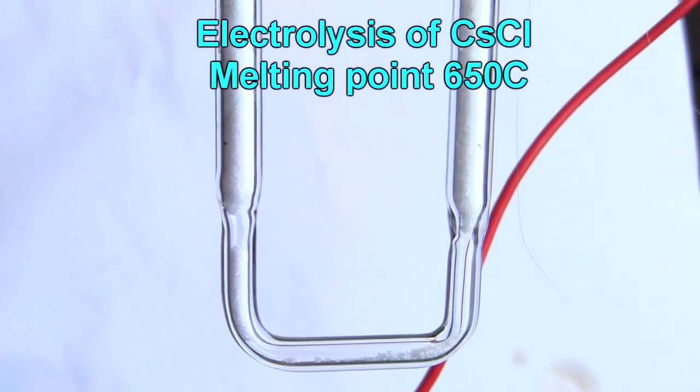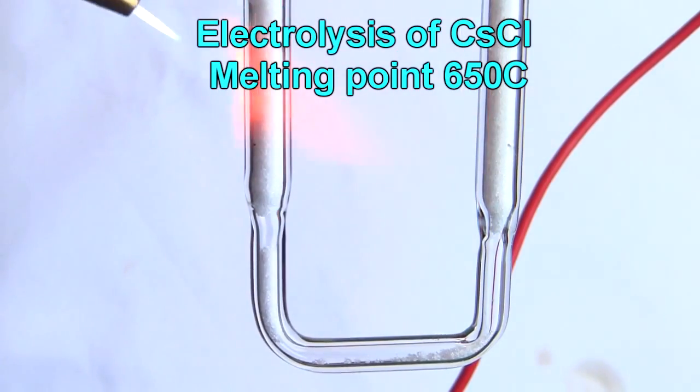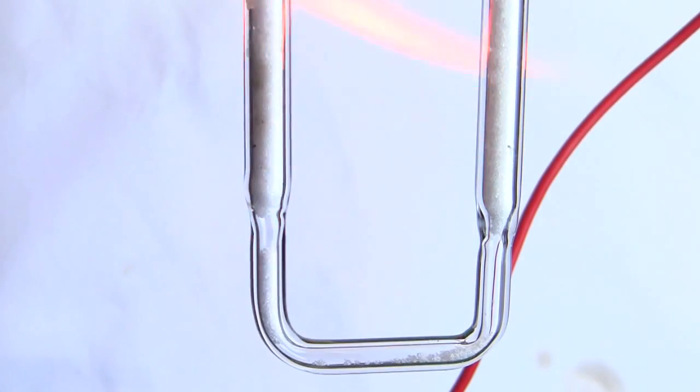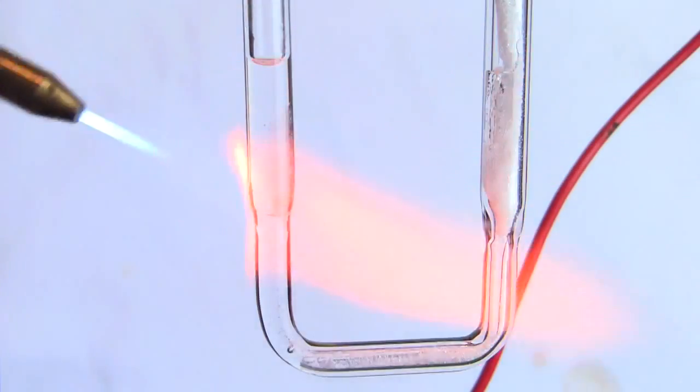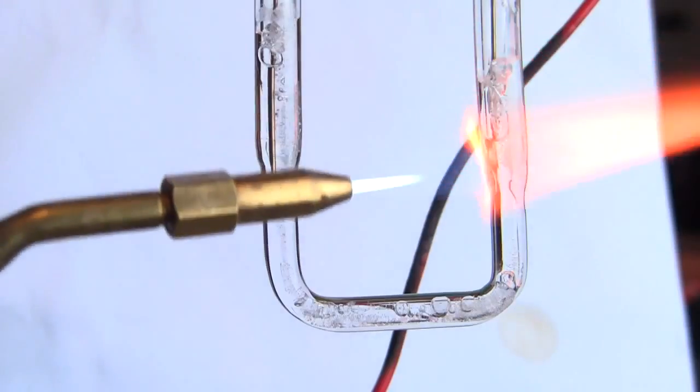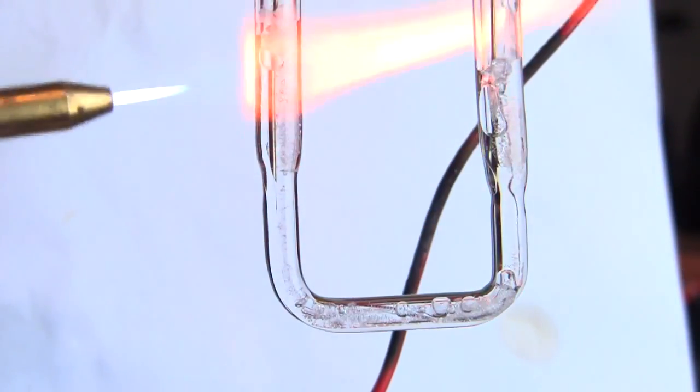So the reason I've got it in this little U-tube type thing is to keep the electrodes separate. So I keep the generation of this blue solution or this cesium, whatever it is, separate from the chlorine. Because those things will react really quite violently if they come into contact. Plus it would obscure the clarity of the experiment.